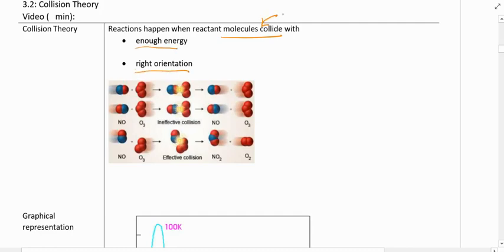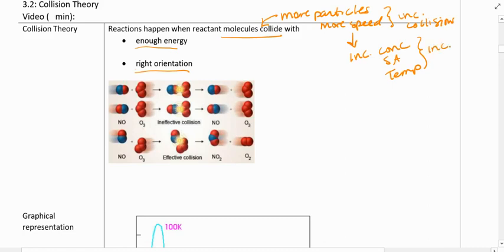Colliding is the first point. When we have more particles or more speed, we get increased collisions. This is why increasing the concentration or the surface area or the temperature, all of these increase reaction rates because they're increasing the number of collisions that are possible.